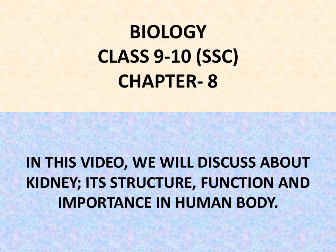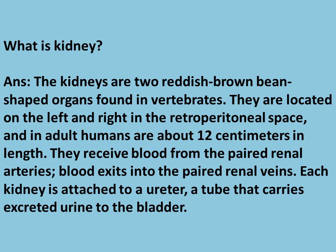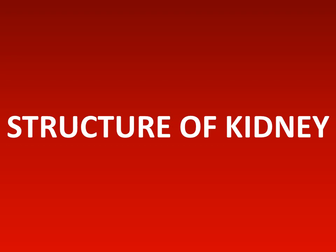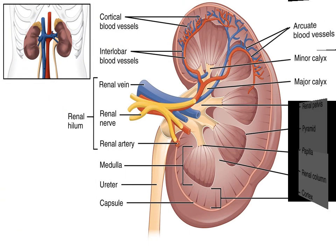Welcome to School 2020. In this video we will discuss the kidney — its structure, function, and importance in the human body. The kidneys are two reddish-brown bean-shaped organs found in vertebrates. They are located on the left and right in the retroperitoneal space, and in adult humans are about 12 centimeters in length. They receive blood from the paired renal arteries, and blood exits into the paired renal veins. Each kidney is attached to a ureter, a tube that carries excreted urine to the bladder.